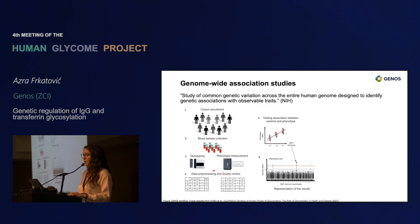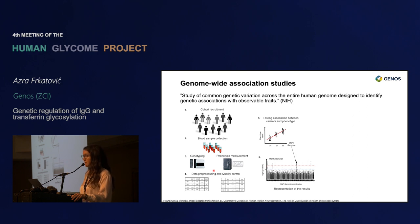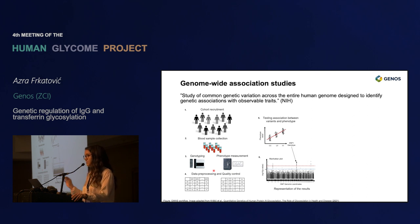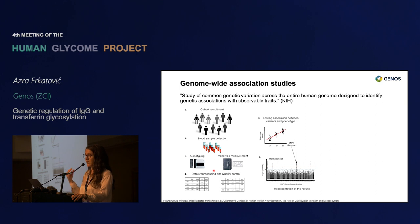We are using genome-wide association studies, which are, by the definition of the National Institute of Health, a study of common genetic variation across the entire human genome, designed to identify genetic associations with observable traits. Basically, what we are doing in this approach is scanning through the genome and statistically testing the association between the phenotype and SNPs or other variants in the genome to see what genomic regions are associated.